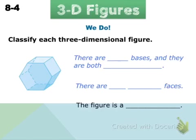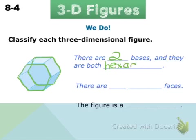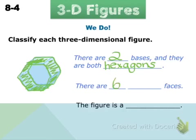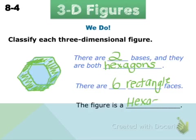Let's look at one more together. There's no point on this one, so there are obviously going to be two bases. They are parallel to each other — one here and one in the back — and they have six sides, so they're both hexagons. Counting the faces: one, two, three, four, five, six — one for each side of the base — and they are all shaped like rectangles. So this figure is going to be a hexagonal prism.